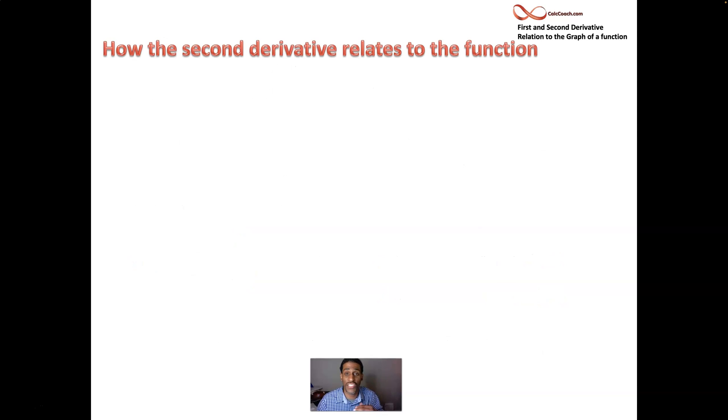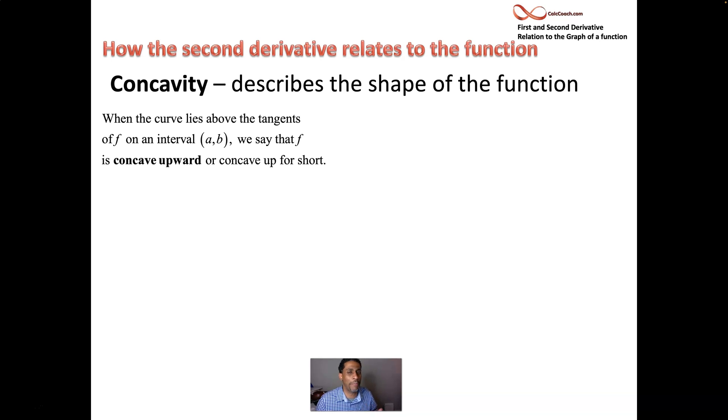I want to introduce you to the second derivative's connection to the function. And next video, we'll introduce the second derivative test. But we can get some information. Everything we've said so far has been about the first derivative and how increasing and decreasing information is gathered from the sign on the first derivative. Well, the shape of the graph is determined by the second derivative. Earlier, we talked about something. Well, now we're going to officially say what concavity is. It describes the shape of the function. Two options: concave up and concave down.